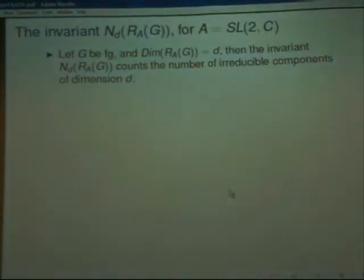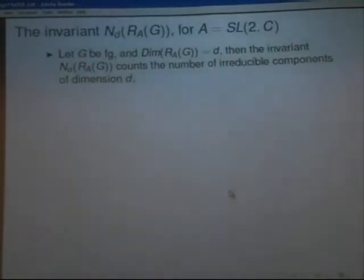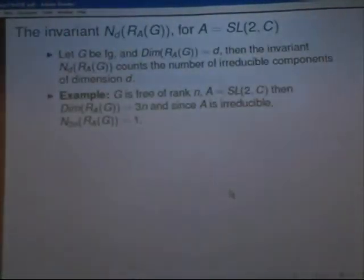So we're working there. So what is this invariant N_d of R_A of G? This invariant says, suppose that you are an algebraic variety, N_d says to you, hello, how many irreducible components of dimension d do you have? Suppose that your dimension is 5 and d is 7, you're going to say, I have no irreducible components of dimension 7. So this is an invariant. This is a question that is being asked of algebraic varieties. So here we are. So we're dragging this invariant into the arena of group theory, finitely generated group theory. So let me compute the invariant for the space representation of a free group.